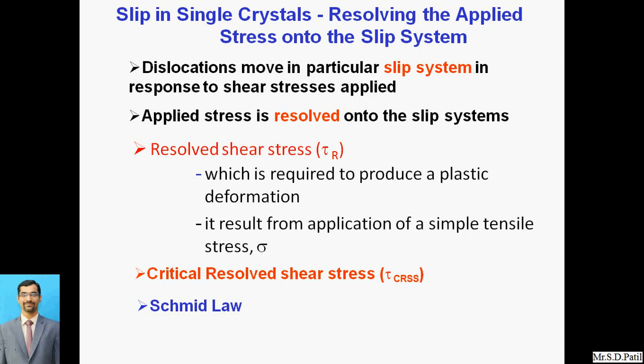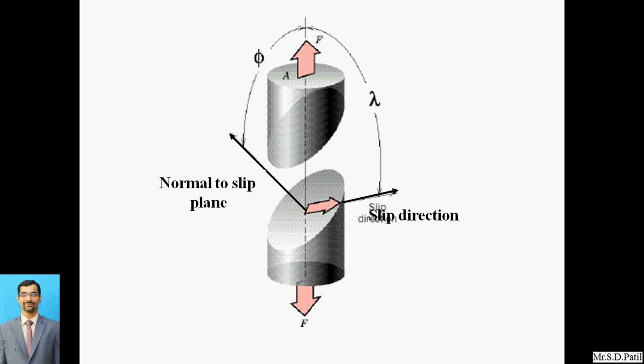The shear stress results from the application of a simple tensile stress, sigma. The critical resolved shear stress, tau crss, indicates the resolved shear stress at the critical condition. We will see what is Schmid's law and the formulation of Schmid's law. Before going further, try to understand this particular diagram.